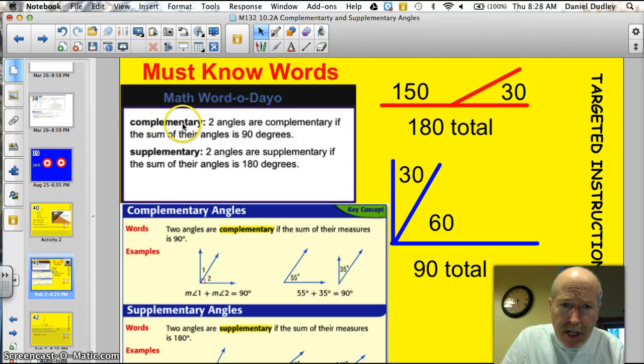So here's my definition. Complementary angles: Two angles are complementary if the sum of their angles is 90 degrees. Just like that, supplementary angles: Two angles are supplementary if the sum of their angles is 180.